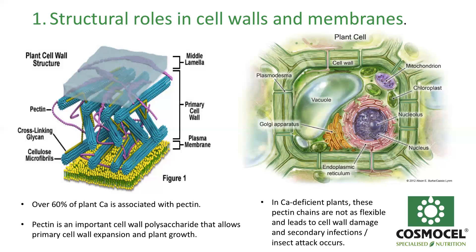If we are calcium deficient very early during cell division, the synthesis of these pectin chains will be incorrect, and that's when we start getting problems with turgidity, cell wall expansion, and cell movement. This can lead to cells bursting, cell contents leaking out, and secondary infections — that's one of the very important structural roles of calcium in the plant.